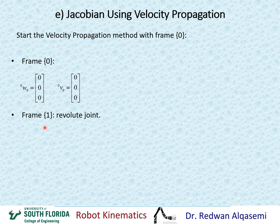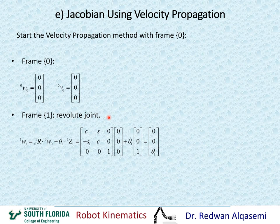Now we move on to frame 1. We know frame 1 has a revolute joint, so we have to use revolute joint equations to find the angular and linear velocities at that frame. For the angular velocities, the angular velocity of frame 1 relative to frame 1 equals R1,0 — and R1,0 is the transpose of R0,1 that was given in transformation matrix T0,1.